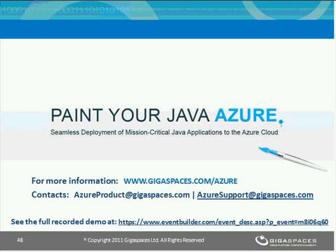I'd like to ask our PM director to select and read three to four questions. The first question is: can I use the Azure management console to add new instances, or do I have to use the Cloudify tools for that? The answer is you can do both. Generally speaking, when a node crashes within Azure, Azure recovers it automatically. Through the Cloudify integration with Azure, we also make sure that all relevant Cloudify components are started as the node is recovered.